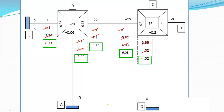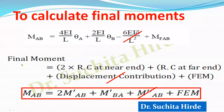Once the final rotation contribution values are obtained at each joint, the next step is to calculate the final moments. The formula is: final moment = 2 × (rotation contribution at near end) + (rotation contribution at far end) + displacement contribution + fixed end moment. Since this is a non-sway problem, there is no displacement contribution, so the formula simplifies to: M = 2 × RC_near + RC_far + FEM.